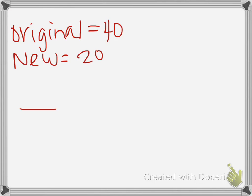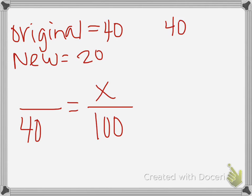So using our proportion, the number that is always constant is that 100. We're looking for the percent of change. Now our original is going to be that $40 that goes on the bottom, and then we're going to have to subtract 40 minus 20, which gives us $20. So that's going to go on top of the $40.